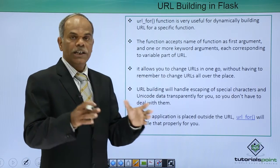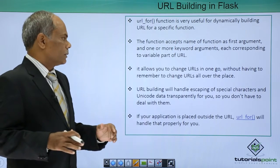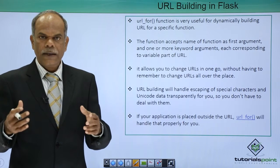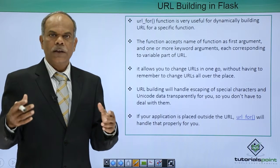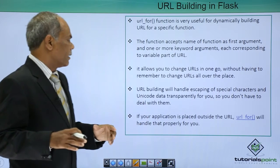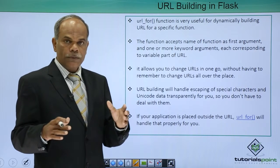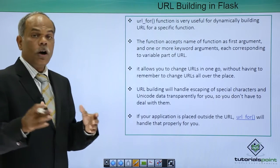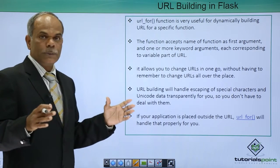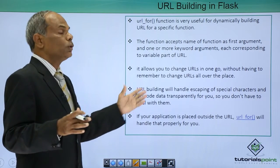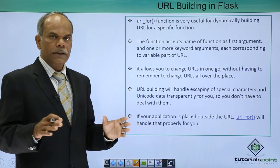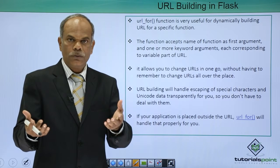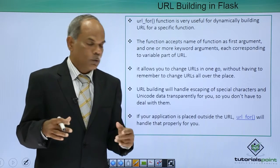It allows you to change the URL in one go without having to remember the entire URL — by just using the keyword arguments you can form the URL in a dynamic manner. Another advantage of this url_for function is that you will be able to handle the escaping of special characters, especially unicode data, very transparently, so that you as a developer do not have to deal with those unicode characters.